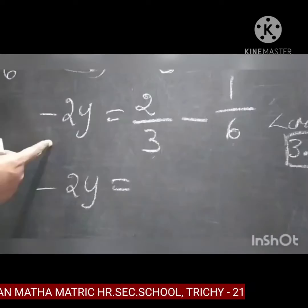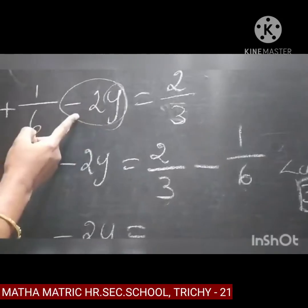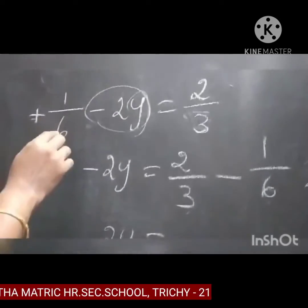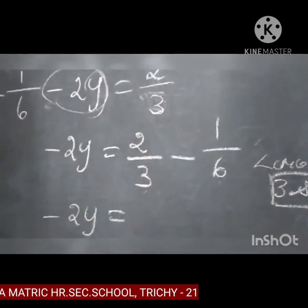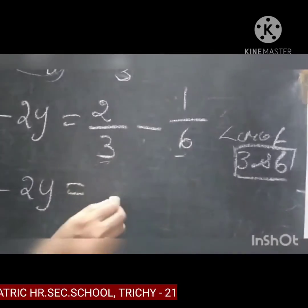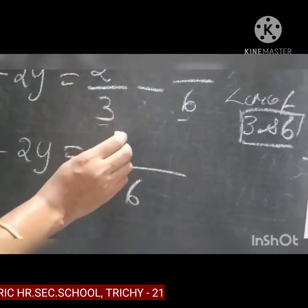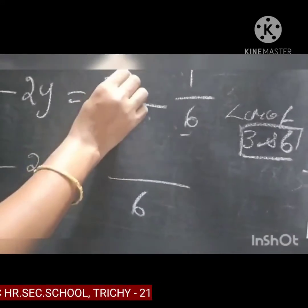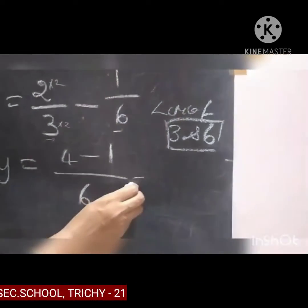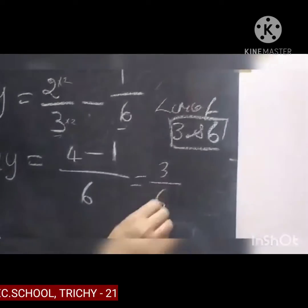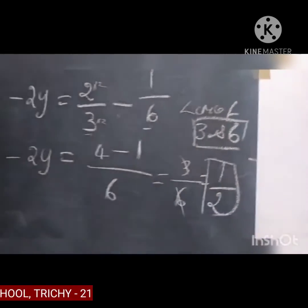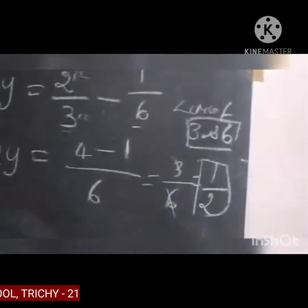Simplify plus 1y and minus 3y: you get 1 by 6 kept as it is, minus 2y equal to 2 by 3. Now, to find the value of y, keep minus 2y on the left hand side. This plus 1 by 6 comes to this side meaning minus 1 by 6. So on the right hand side: 2 by 3 minus 1 by 6. Take the LCM of 3 and 6, which is 6. Multiply 2 by 3 by 2 to get 4, minus 1, giving 4 minus 1 is 3 by 6. Cancel to get 1 by 2. So minus 2y equal to 1 by 2.